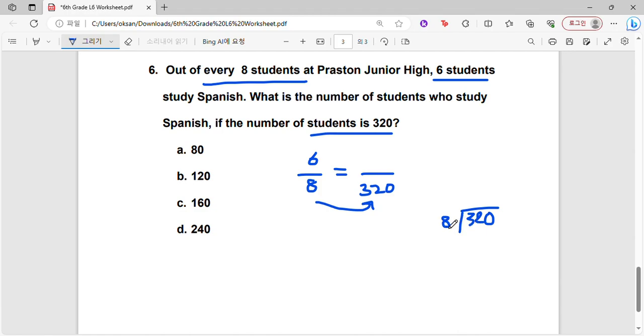8 doesn't go into 3, but it does go into 32 4 times. 4 times 8 is 32. Then bring down the 0. Goes in 0 times. And so 40. So we would have to multiply 40 here. And then we would also have to multiply 40 on the top as well.